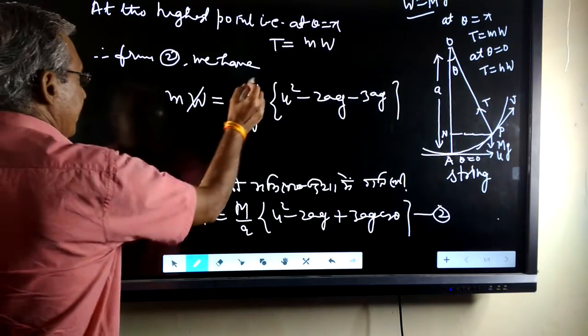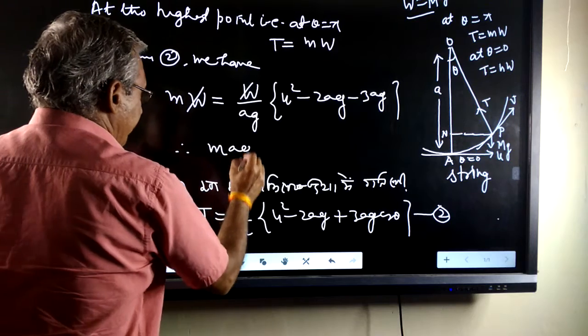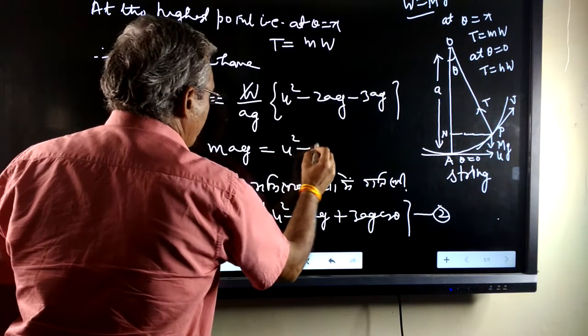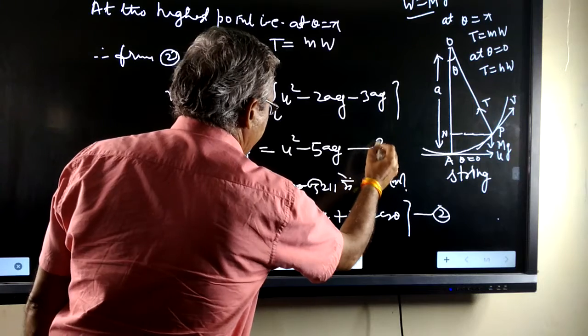w is cancelled out. Therefore, we can say, mag equals to u square minus 5ag.